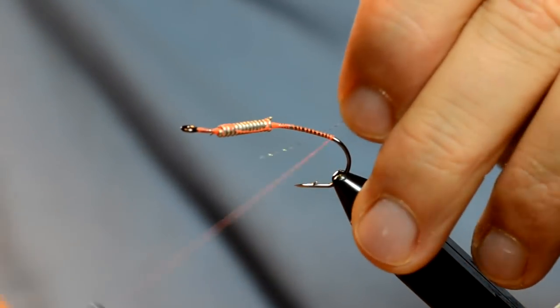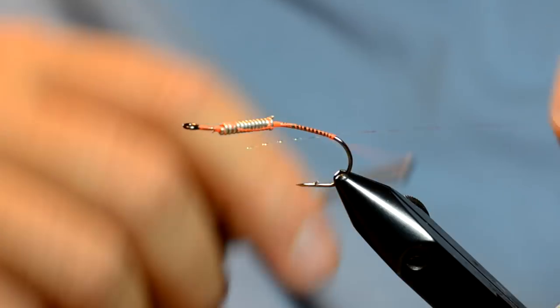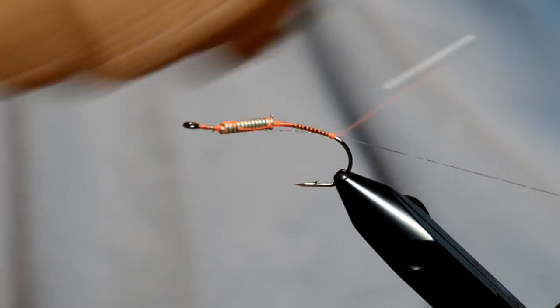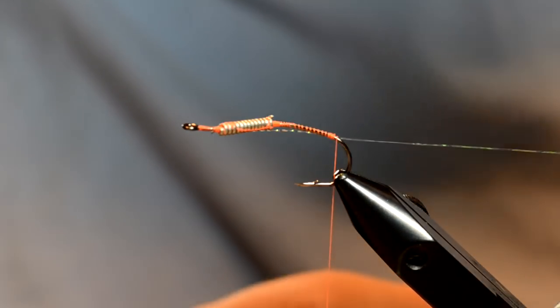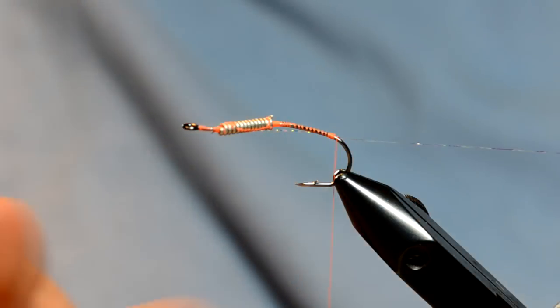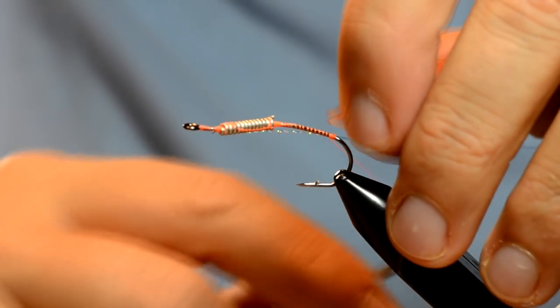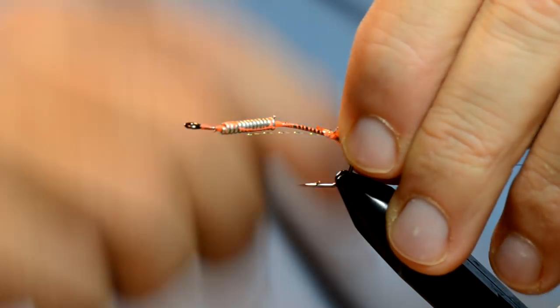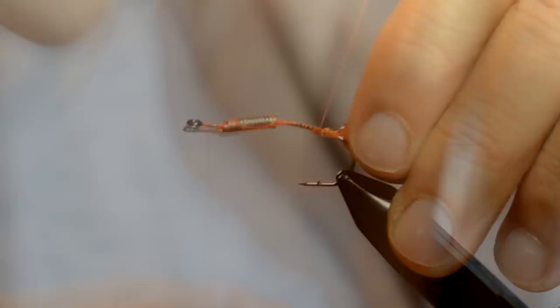Okay, I'm going to go ahead and put in some ribbing. This is just some crystal flash. Now I've got my UV Chewy Skin. This is orange. You can use pink, red, it doesn't matter. I'm going to tie this in right at that point.